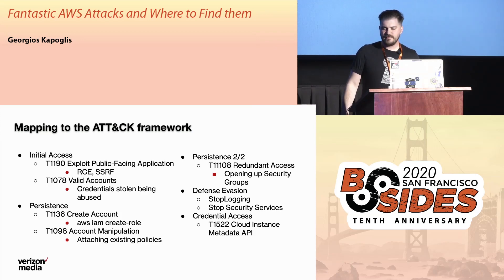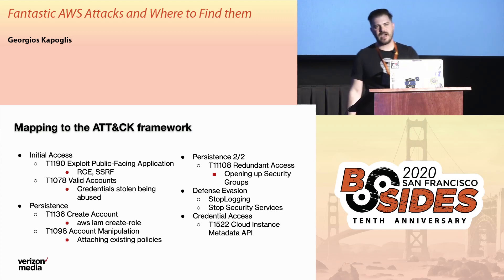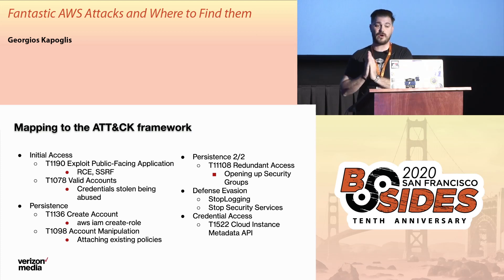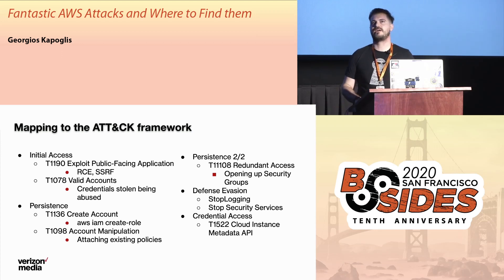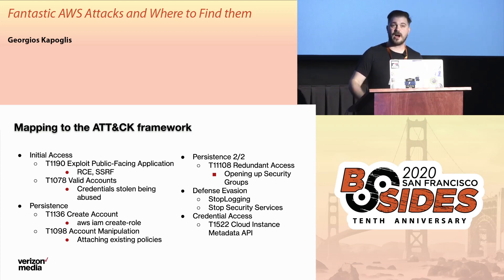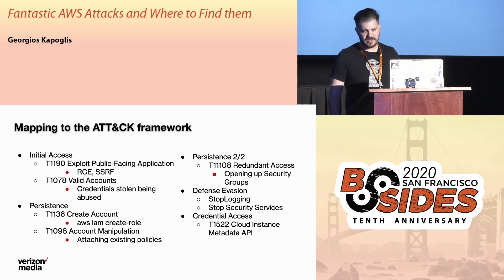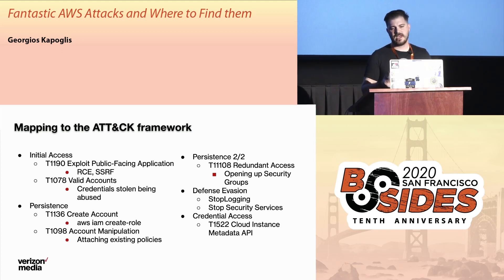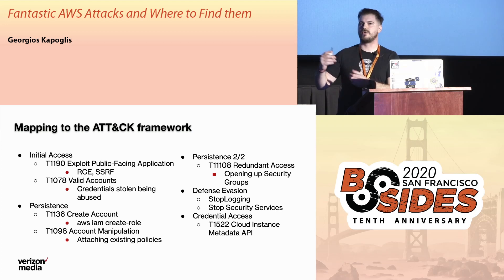For defensive evasion, I don't have a specific technique attached here because there wasn't one in the MITRE matrix yet — I'm planning to contribute to add this. If the attacker has the permissions and they're skilled, they'll essentially try to stop logging and security services. They'll stop CloudTrail, stop GuardDuty if you have it, because they don't want to be caught. Lastly, credential access maps back to initial access — using the metadata API to get credentials.